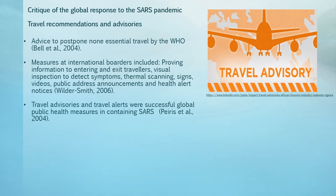The next aspect of the critique is regarding the use of travel recommendations during the pandemic. Advice to postpone non-essential travel by the WHO and various governments was crucial during the SARS pandemic. Within 15 days of being notified of the new atypical pneumonia, the WHO issued a series of travel advisories to postpone non-essential travel to SARS-affected areas, which limited the spread of infection by international travel. Measures included providing alert information to entering and exiting travellers, signs, videos, public address announcements, health alert notices, thermal scanning and visual inspection to detect symptoms. Issuing travel alerts and advisories early in the outbreak has been linked to a successful global public health initiative in containing the outbreak.